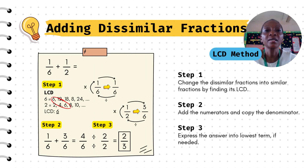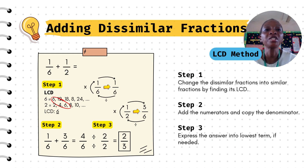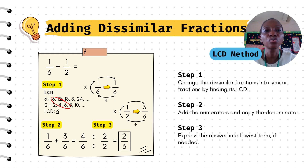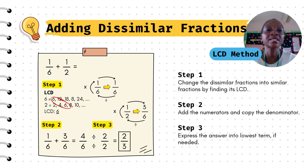Now let's talk about adding dissimilar fractions using the LCD or LCM method. Step 1: change the dissimilar fractions into similar fractions by finding the LCD. Step 2: add the numerators and copy the denominator. Step 3: express the answer in the lowest term if needed.